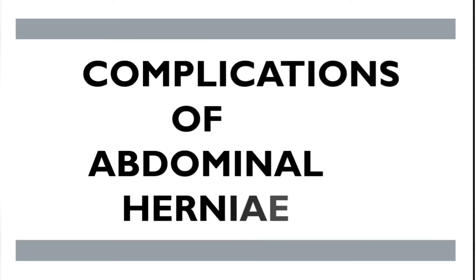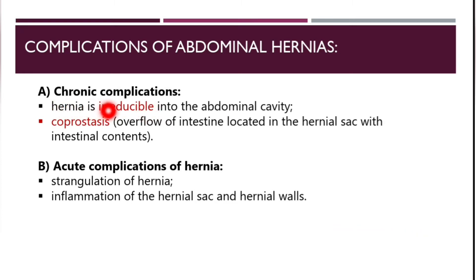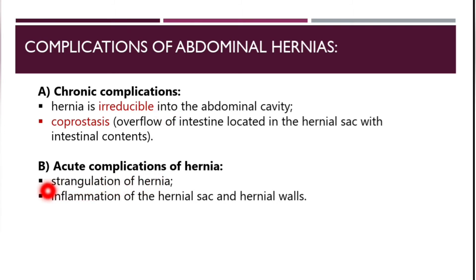Complications of abdominal hernia can be divided into chronic and acute complications. Chronic complications include irreducible hernia, where the hernia is irreducible into the abdominal cavity, and coprostasis, which is overflow of intestine located in the hernia sac with intestinal contents. Acute complications include strangulation of the hernia and inflammation of the hernia sac and hernia pores.